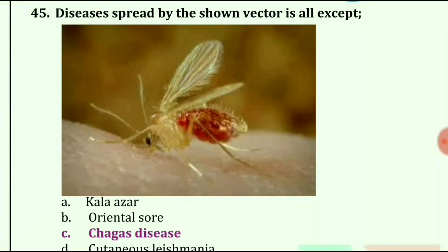Spread by the shown vector — all except: options are kala-azar, oriental sore, Chagas disease, and cutaneous leishmaniasis. The answer is Chagas disease.